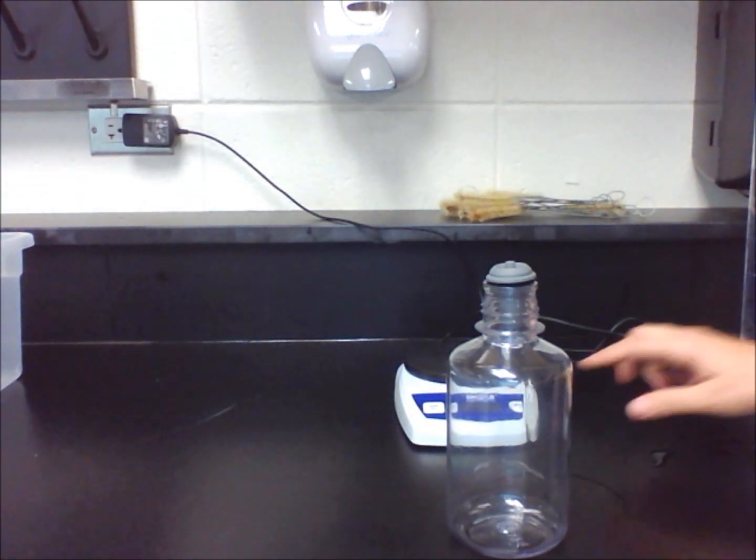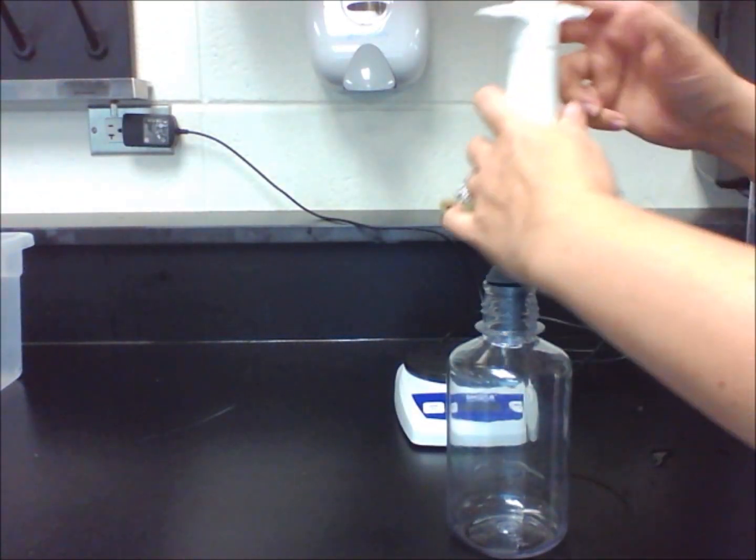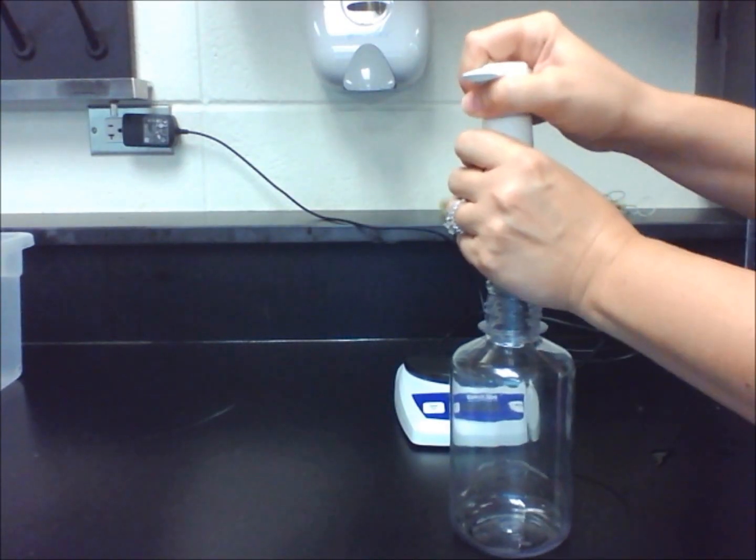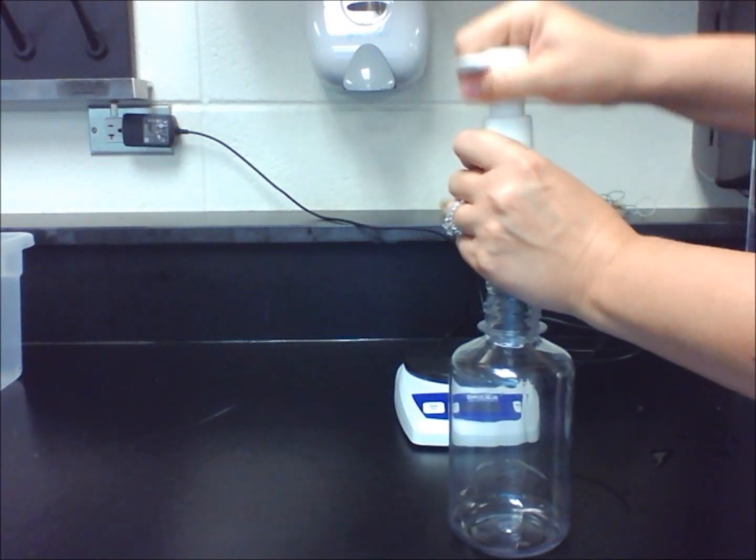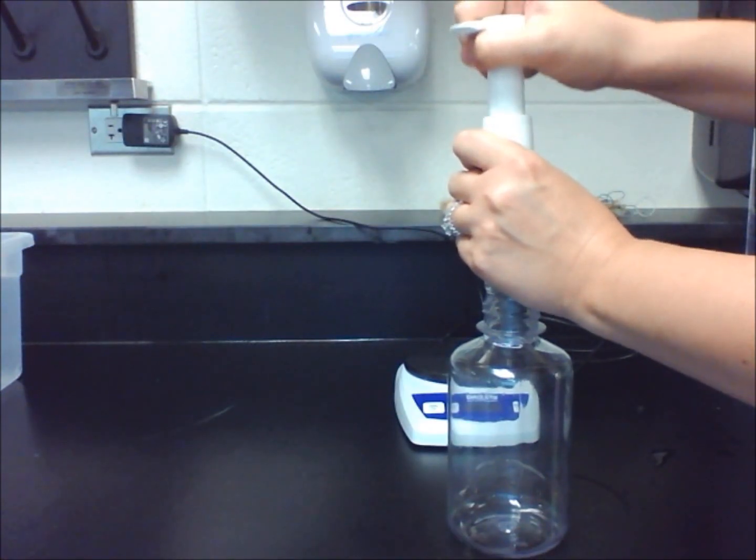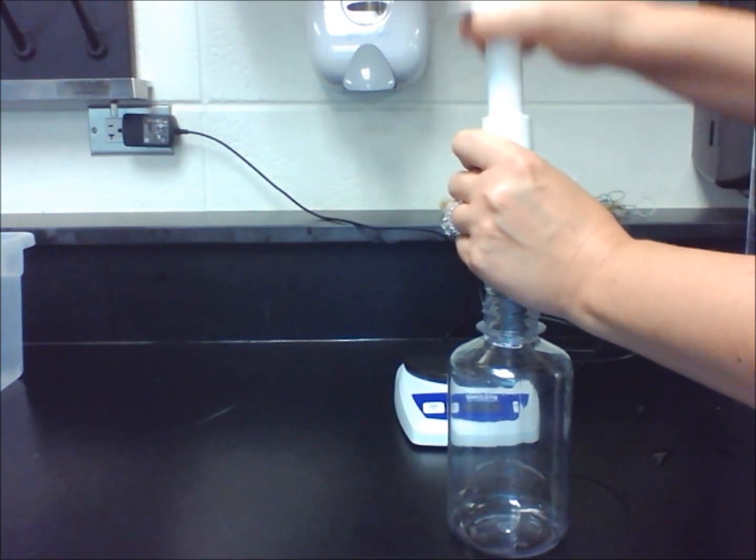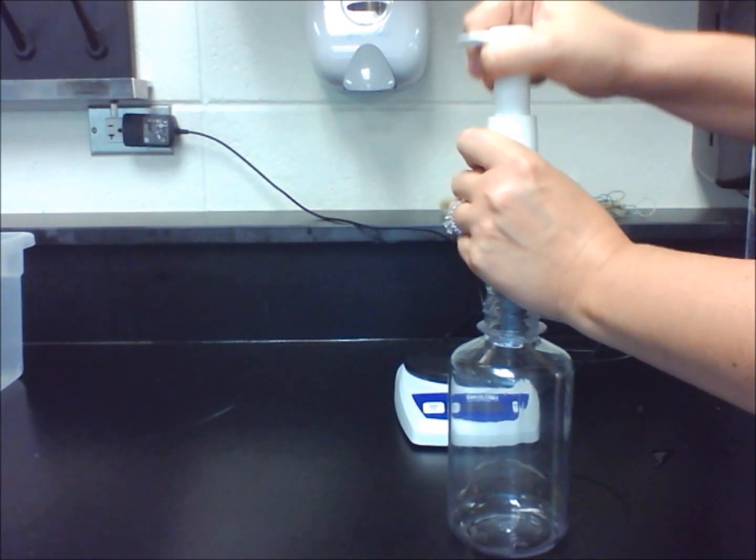Once we find the mass of the bottle and valve, then we need to start pumping air out. We can pump air until it becomes difficult to move the pump. If suddenly it gets easy to pump, that's because the seal has been broken and the valve needs to be reset and the air pumped out again.